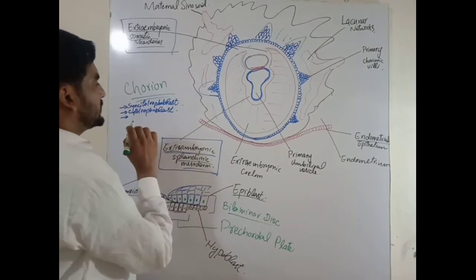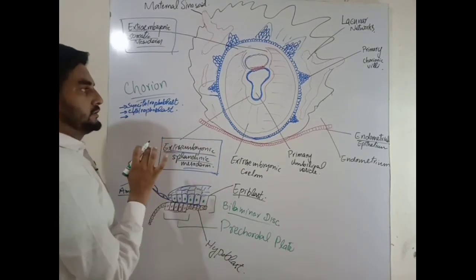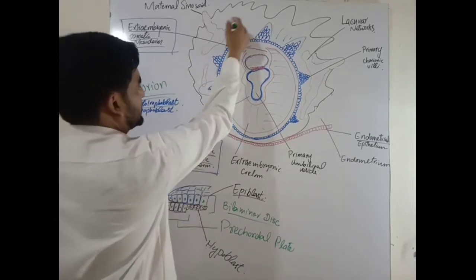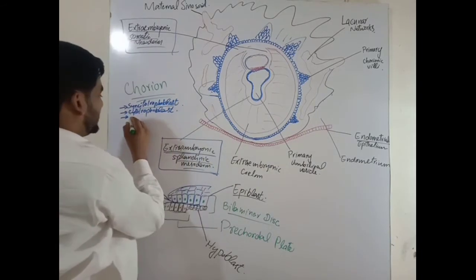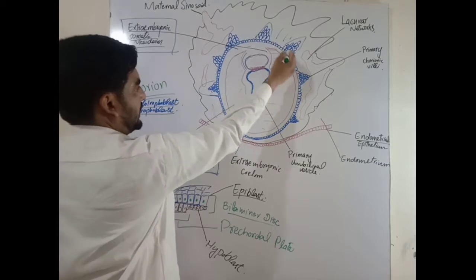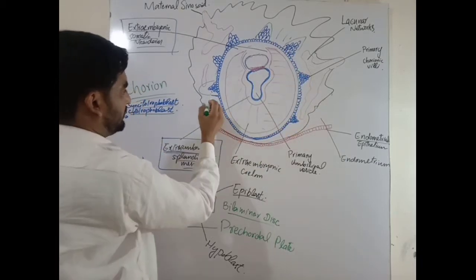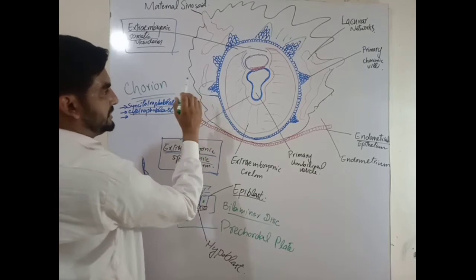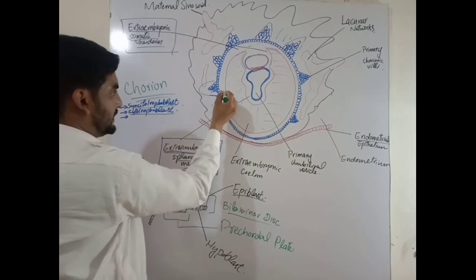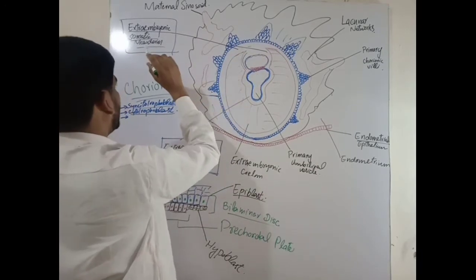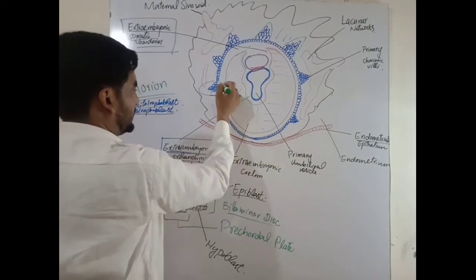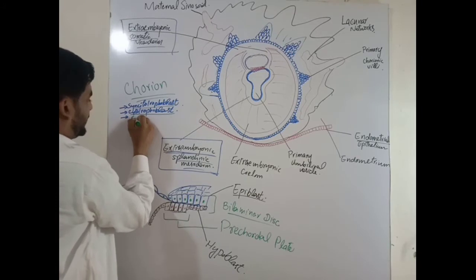The chorion is thought to be composed of three parts. One is the syncytiotrophoblast. The second is the cytotrophoblast — a layer of cells from which the primary chorionic villi project outward. The third is the part of the extra-embryonic mesoderm which is called the somatic mesoderm.